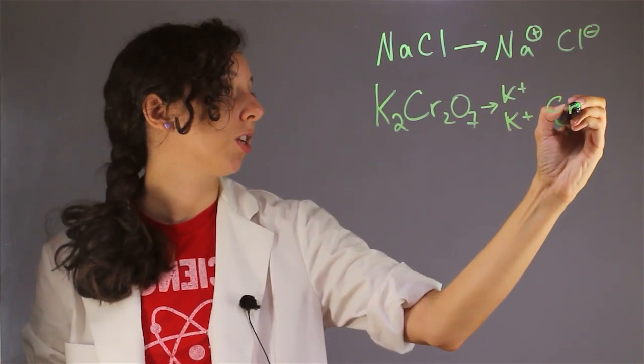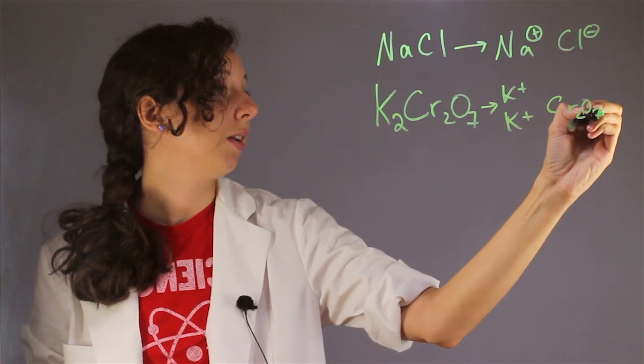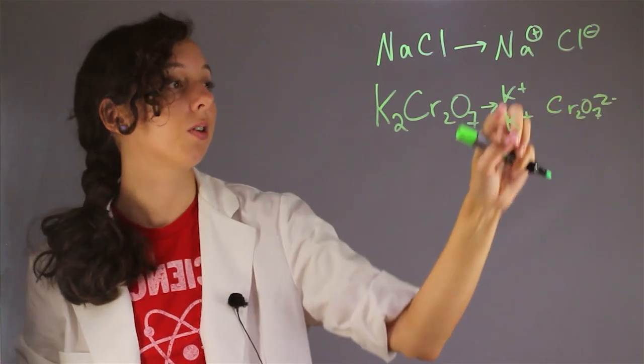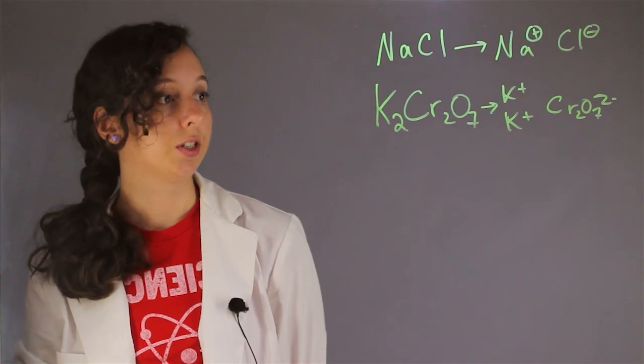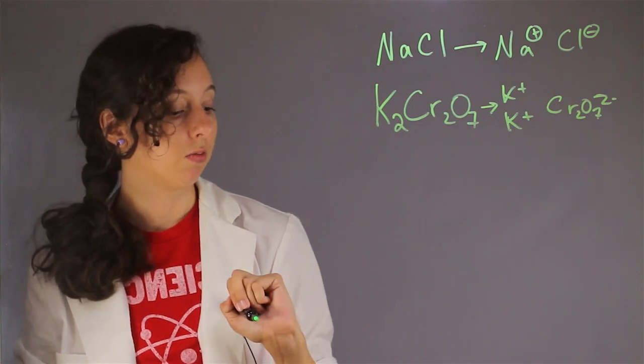And then this chromate is just its own ion and it has a 2- charge. So when they're all together they're neutral. This is another salt and let's just take a look at one more salt.